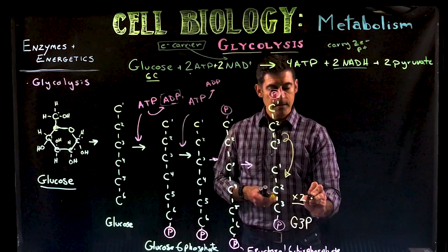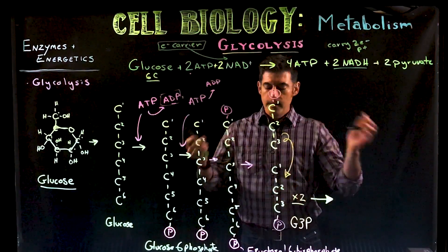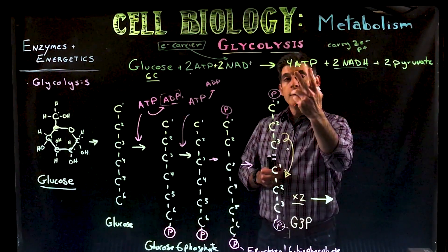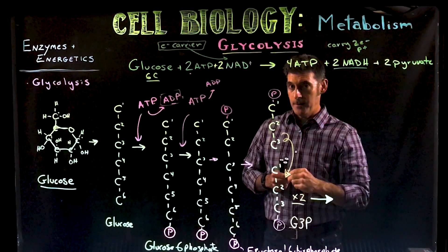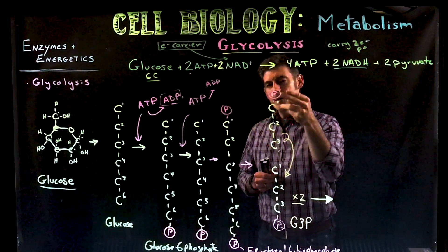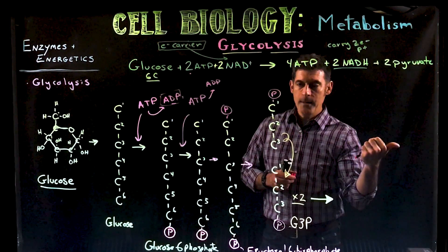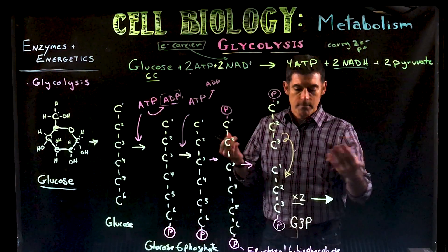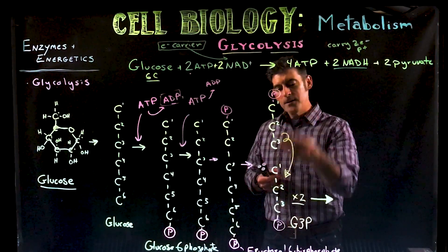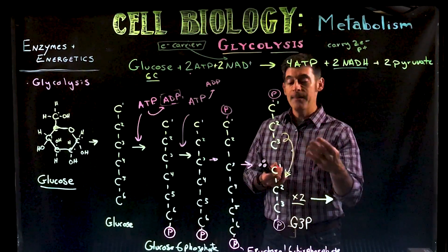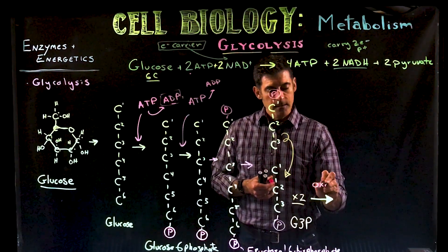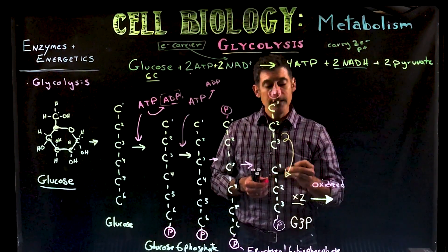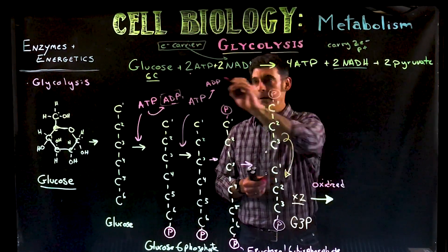This next step is fairly important to the overall view of glycolysis. Glycolysis gives us a gain of ATP directly out of the process. We used two ATP earlier, and while we can recover those phosphates, at this point no net energy has been gained — it's like buying and selling something for the same price. Now these molecules are going to be oxidized, losing electrons, and that releases energy.